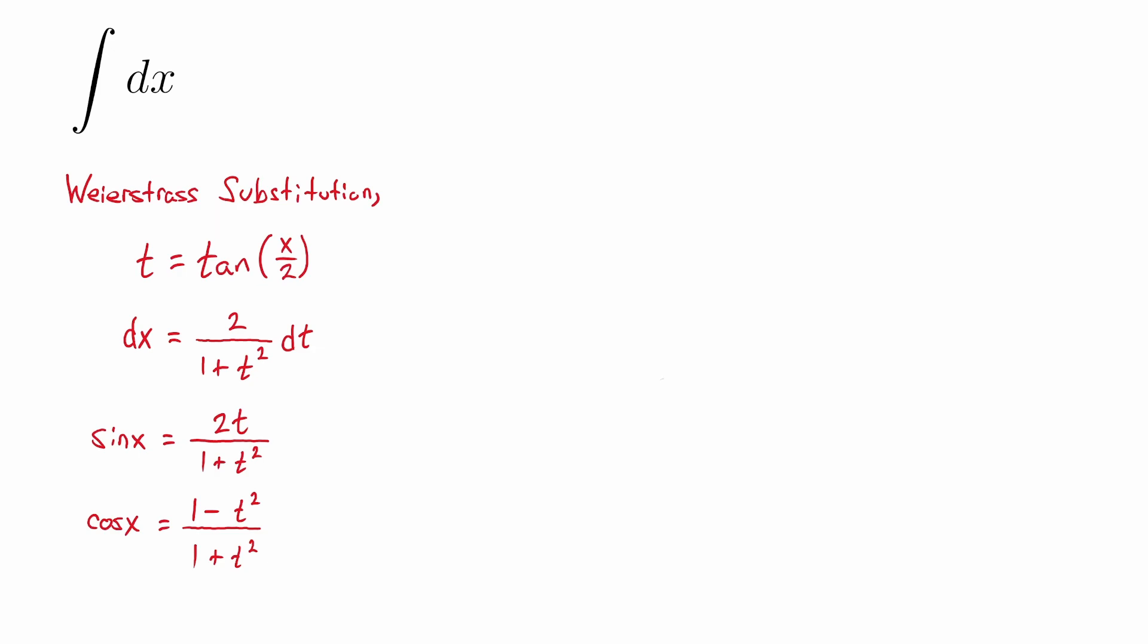For our first step, we're going to replace dx with the expression down below in terms of t. So we get this as the integral of 2 divided by 1 plus t squared dt.